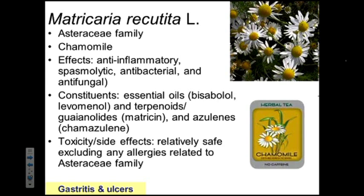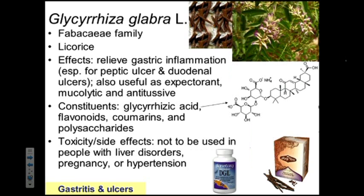Some of the important constituents include essential oils and terpenoids — these are the fragrant compounds that give the distinctive odor and taste — plus guaianolides and azulenes. Chamomile is generally recognized as safe unless you have an allergy to the daisy family; if you have an asthma allergy, avoid chamomile. Another plant good for calming gastric inflammation, especially for patients with peptic and duodenal ulcers, is licorice — in particular, the glycyrrhizic acid is one of the major components, along with various flavonoids, coumarins, and polysaccharides.